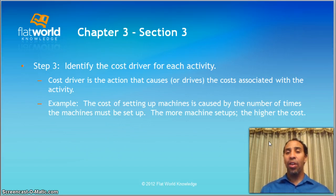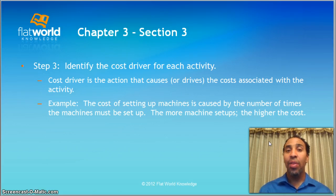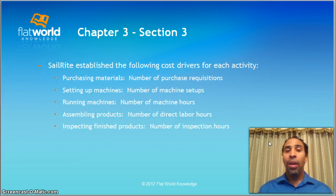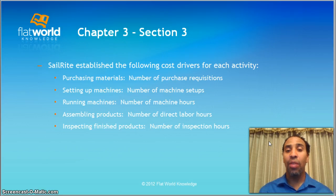Step three: identify the cost driver for each activity. The cost driver is the action that causes or drives the costs associated with the activity. For example, the cost of setting up a machine is caused by the number of times the machine must be set up — the more machine setups, the higher the cost. Sailrite established the following cost drivers: purchasing materials uses number of purchase requisitions; setting up machines uses number of machine setups; running machines uses number of machine hours; assembling products uses number of direct labor hours; and inspecting finished products uses number of inspection hours.